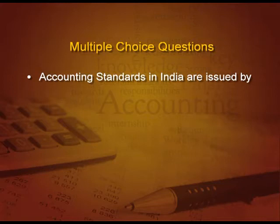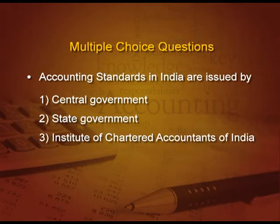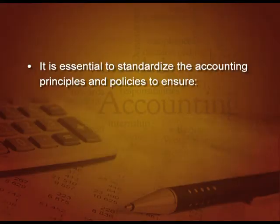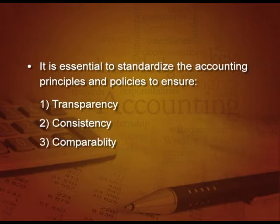Let us do some questions to see whether we have understood the topic. First question: accounting standards in India are issued by — first, central government; second, state government; third, ICAI; or fourth, Reserve Bank of India? Yes, it is a simple one — ICAI. Next question: it is essential to standardize the accounting principles and policies to ensure — first, transparency; second, consistency; third, comparability; or all of the above?